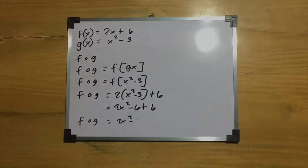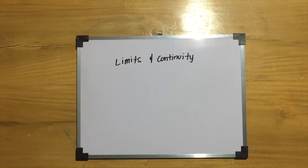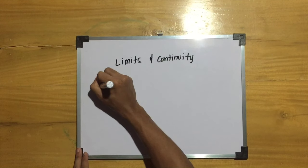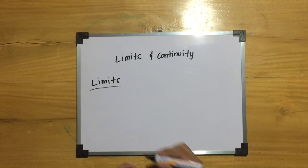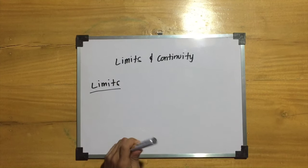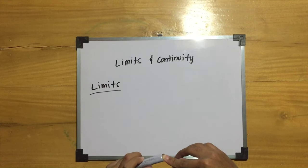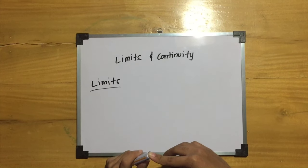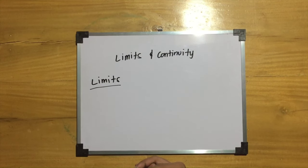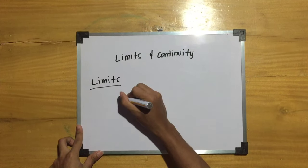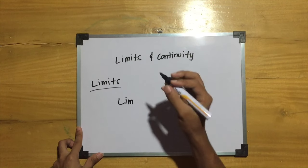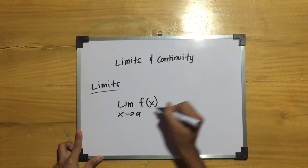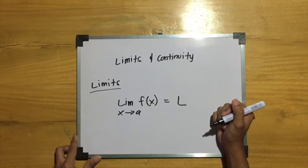Now let us move on to limits and continuity. What do we mean by limits? A limit is the value that a function approaches as the input approaches some value. Suppose f of x is close to a particular value L as x is close to some value a. Then we say L is the limit of f of x as x approaches a, written as the limit of f of x as x approaches a equals L.